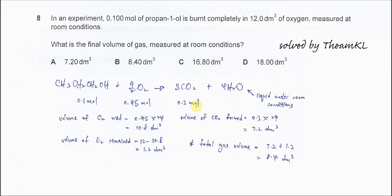Question 8. In an experiment, 0.1 mol of propane-1-O is burned completely in 12 dm³ of oxygen. What is the final volume of gas measured at room condition?